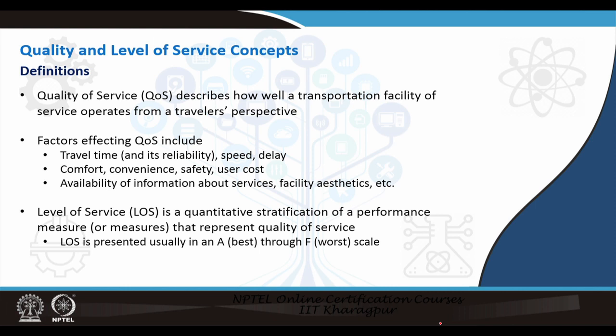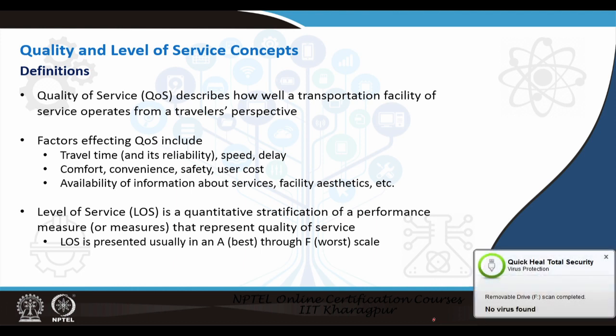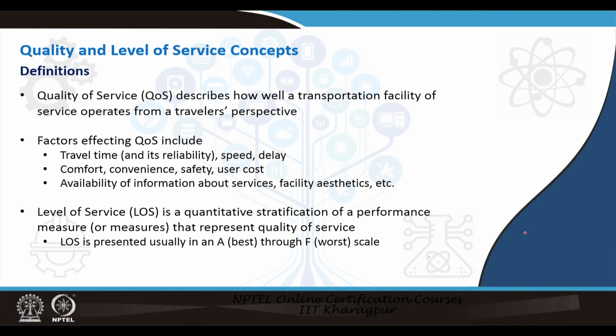When we talk about quality of service, this is something that describes how a transportation facility operates from a traveler's perspective. We have often looked at transportation facilities from the point of view of the operators or the service providers. But what quality of service does is it allows you to judge or determine how good a facility is from a traveler's perspective. Factors that would affect quality of service include travel time, speed, and delay for the people who are using the facility.